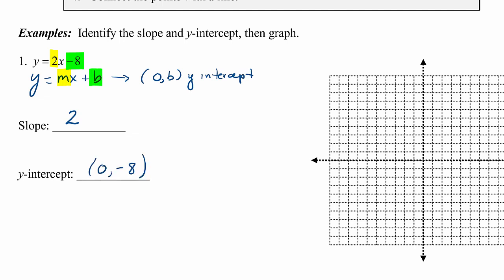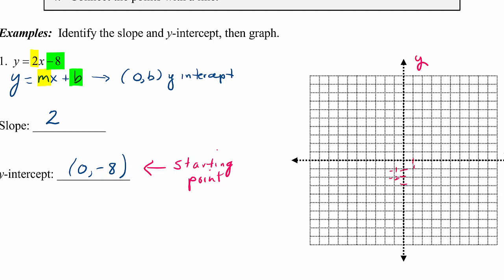We're going to use the y-intercept as the starting point. When we go to our rectangular coordinate system, we're going to start by graphing (0, negative 8). We have our grid here labeled with our axes, and each tick mark is worth one unit. So (0, negative 8) will be down here — that's our starting point. Go ahead and put a dot there.